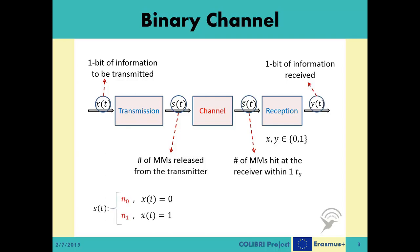In the transmission part, the transmitter decides on the value of St based on the current bit value of Xt as N0 if the bit value is 0 and N1 if the bit value is 1. These released molecules propagate in the channel and the receiver starts counting the number of messenger molecules hitting itself within the current symbol duration.